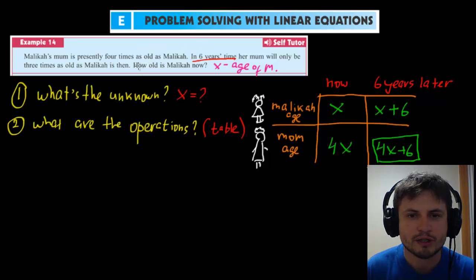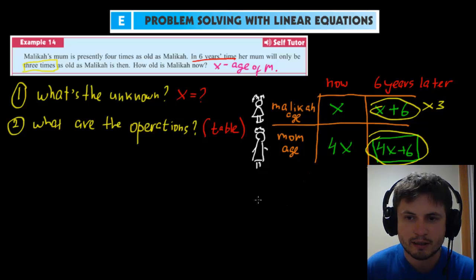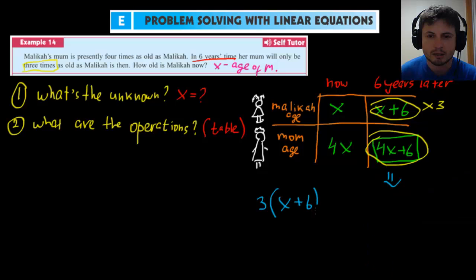Now the question gives us another piece of information and that's that in six years time her mom will be three times as old as Malika, three times as old. It says it right here. In other words, what this means is that this here is three times of this. So times three. So if we actually rewrite this last column, what we're going to get is we're going to get three multiplied by X plus six equals to 4X plus six.